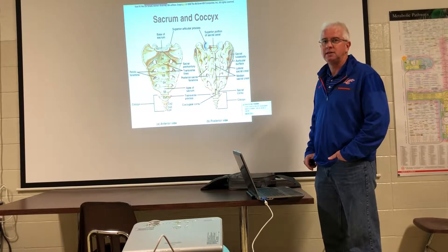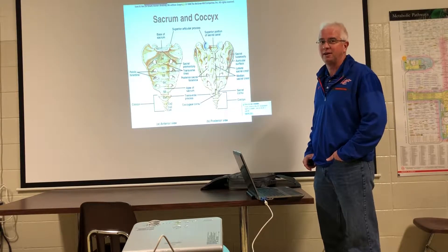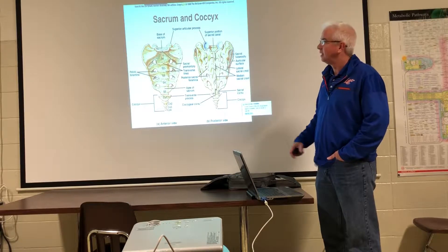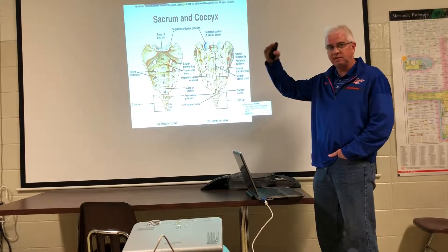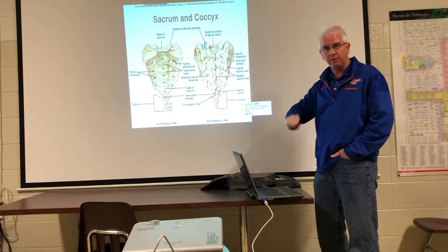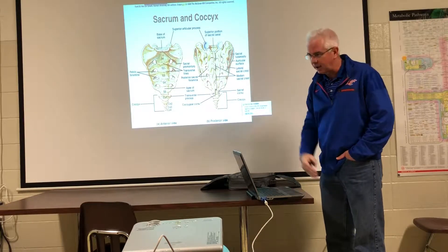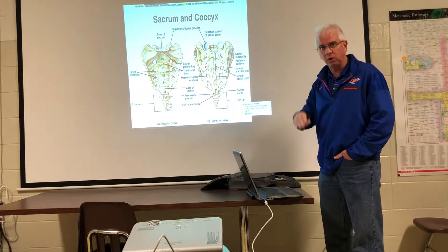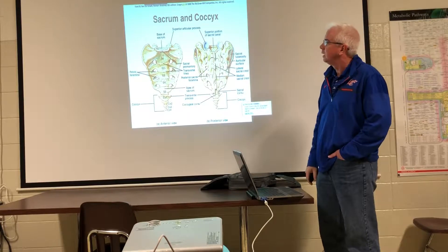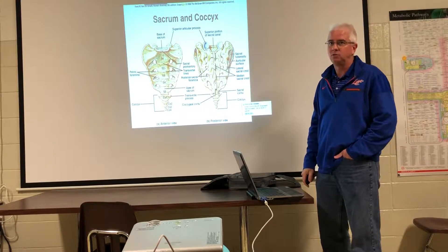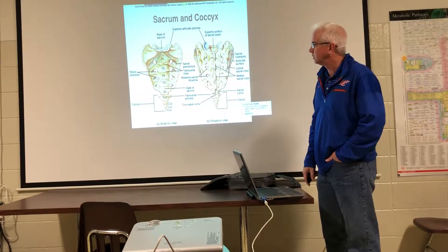Would that be L5 or would that be S1? So at the bottom of the bone — remember at C7, all the nerve names go below now. From C1 to C7, the nerve numbers are above. From C7 down, all the nerve numbers are below. So this one comes out below the body, and that would be S1. This one would be S2, S3, and so on. The sacral nerves here.